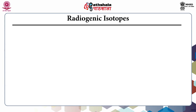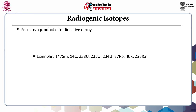Radiogenic isotopes form as a product of radioactive decay. In nature, three radioactive decay chains are ongoing: one starting with thorium-232, second with uranium-238, and third with uranium-235. All ultimately end in lead. During this decay process, a number of intermediate isotopes are produced. Examples include samarium-147, C-14, uranium-238, uranium-235, uranium-234, and radium-226.